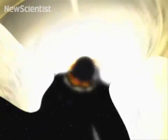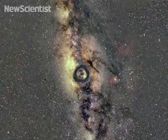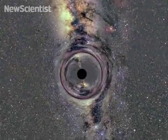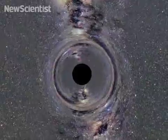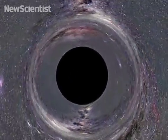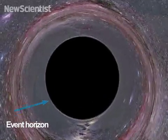A black hole's gravity is so strong that not even light, the fastest thing in the universe, can escape its grasp. The point of no return is called the event horizon. Anything crossing this boundary will vanish forever.